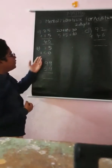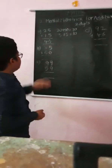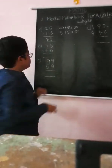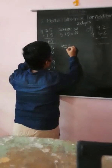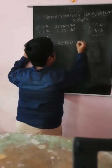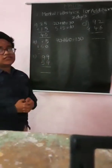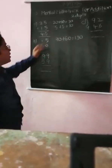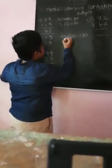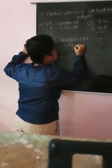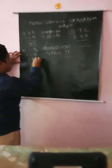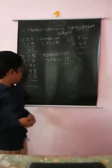Second problem: 75 plus 66. In the tens place, the number is 7 and downwards the tens place the number is 6. Then 70 plus 60 is 130. Again, in the units place, the number is 5 and downwards the number is 6. You know that 5 plus 6 is 11. Then the answer is 130 plus 11 is 141.